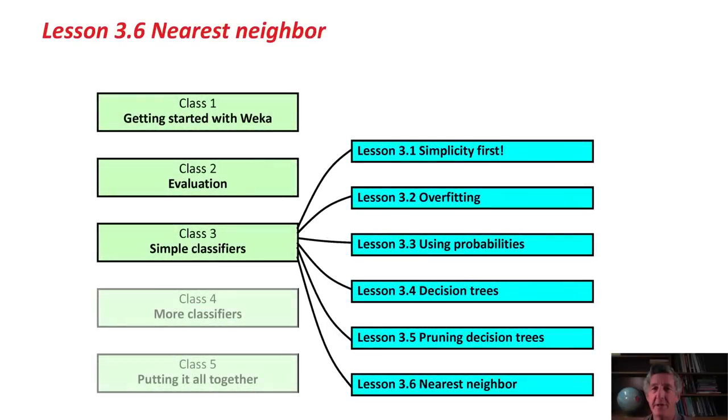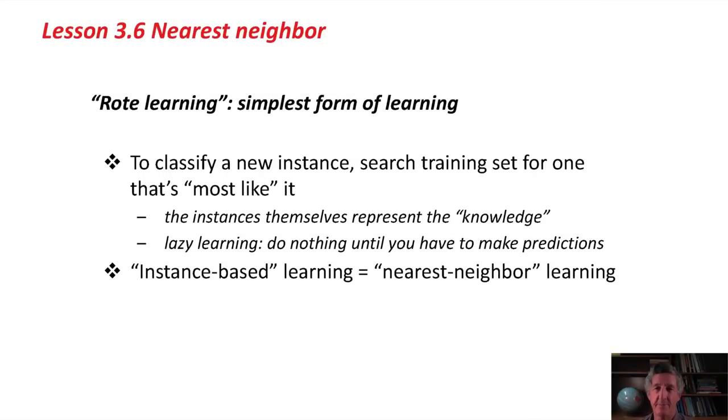We're going to talk here in the last lesson of Class 3 about another machine learning method called the nearest neighbor, or instance-based machine learning method. When people talk about rote learning, they just talk about remembering stuff without really thinking about it. It's the simplest kind of learning.